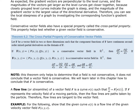Conservative fields also have a special property called the cross-partial property. This helps test whether a given vector field is conservative, but it only confirms when it's NOT conservative — it doesn't confirm that it is. In two-space with functions P and Q, the partial of P with respect to y must equal the partial of Q with respect to x. In three-space, additionally: the partial of Q with respect to z must equal the partial of R with respect to y, and the partial of R with respect to x must equal the partial of P with respect to z.